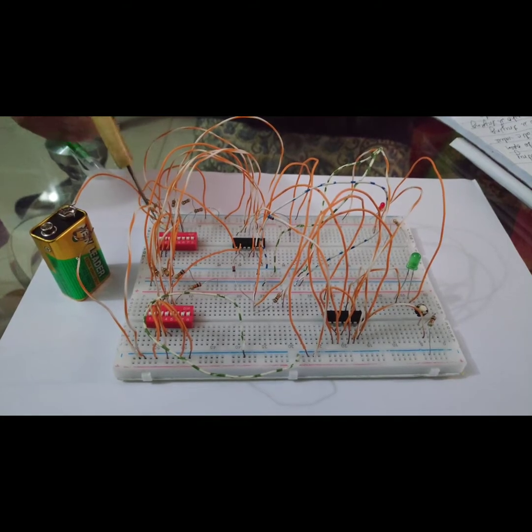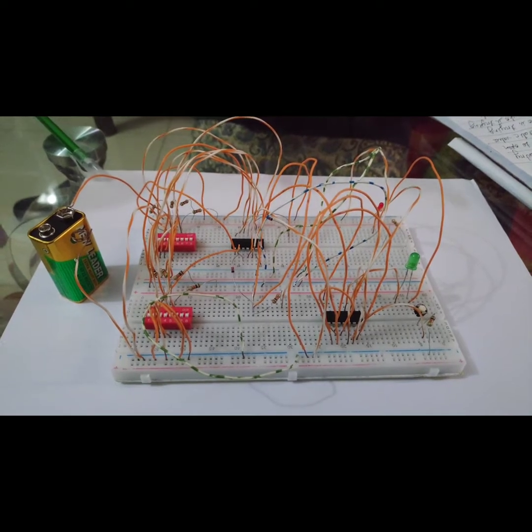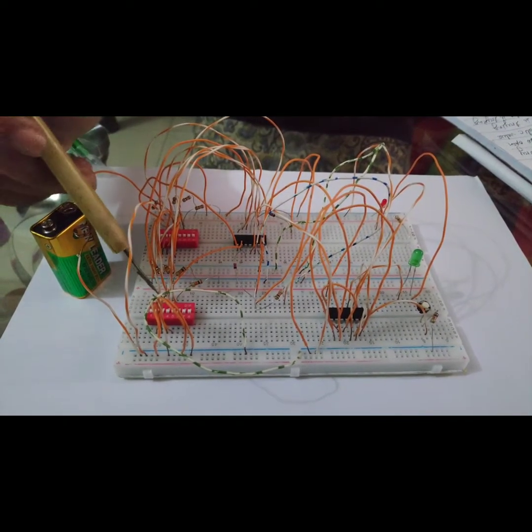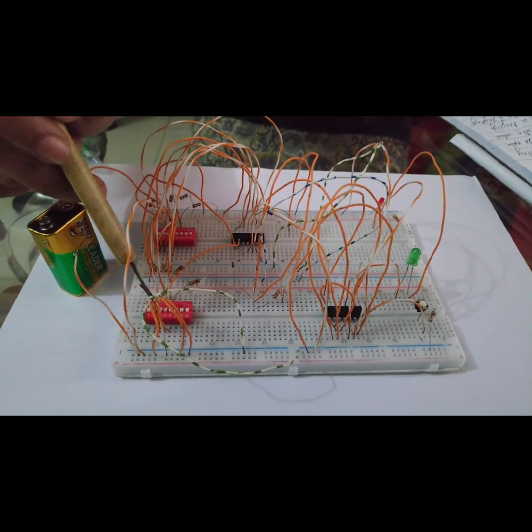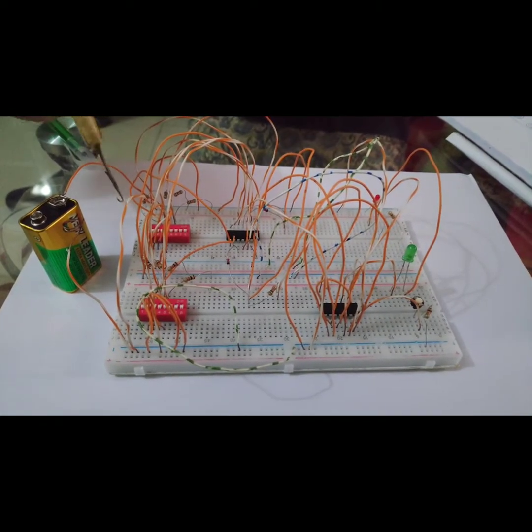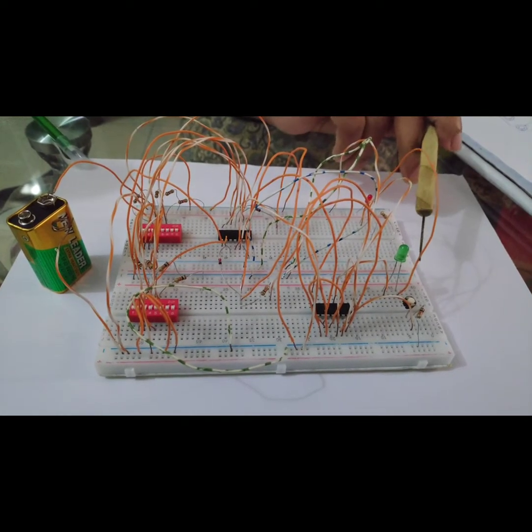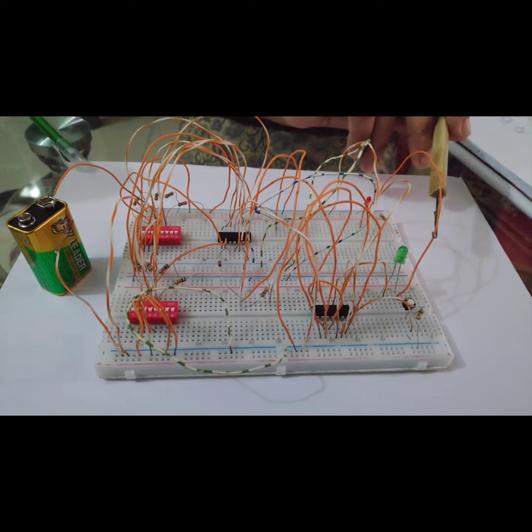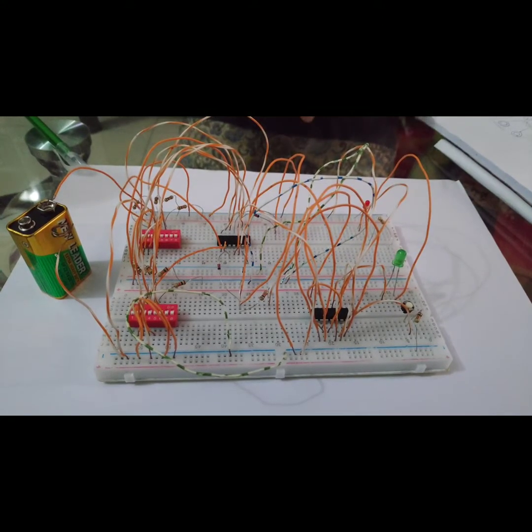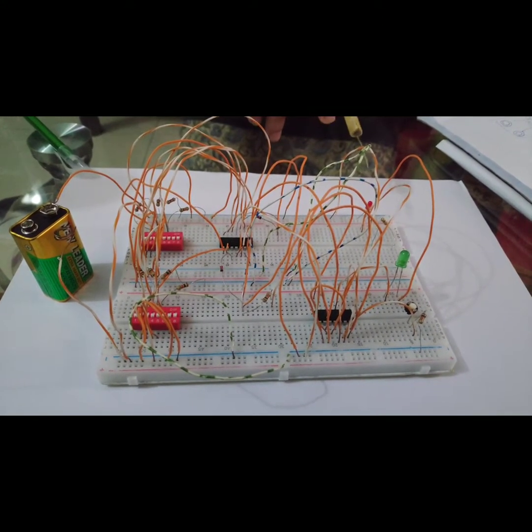If the person who is trying to open the lock enters the code at data entry switch and it matches with the key code switches, the lock will be unlocked and the green light will light. If not, then the red light will be on, which will mean that someone unauthorized is trying to unlock the lock.